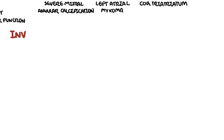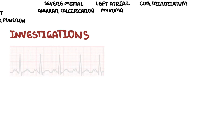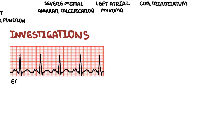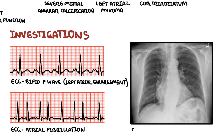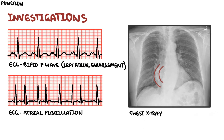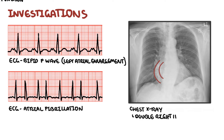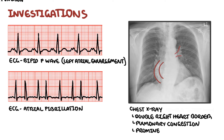Investigations for suspected mitral stenosis: an ECG will show bifid P waves indicating left atrial enlargement or dilatation, and may also show atrial fibrillation — an irregularly irregular heart rhythm. A chest X-ray may show a double right heart border indicating an enlarged left atrium, as well as pulmonary congestion and prominent pulmonary arteries indicating pulmonary hypertension.